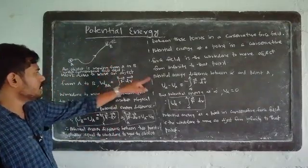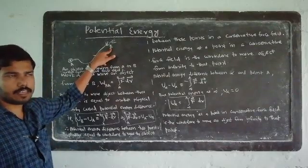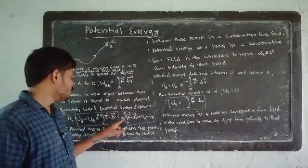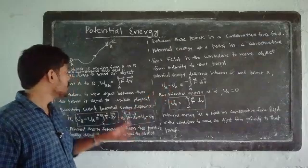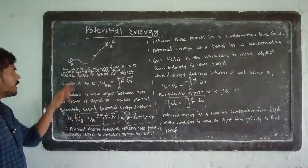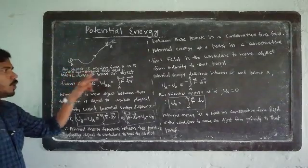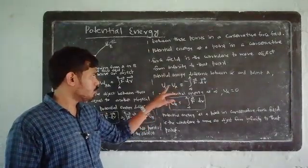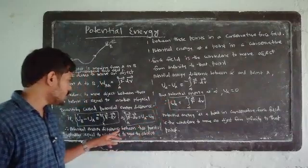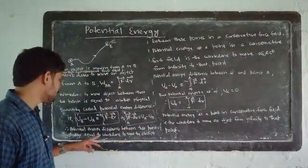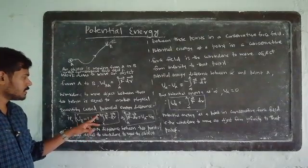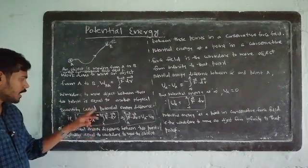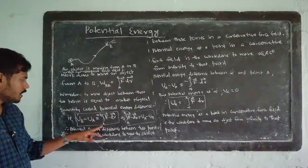The potential energy difference is between the initial potential energy U-infinity and the final potential energy UA. If the initial position is infinity, then U-infinity minus UA is equal to minus integral from A to infinity of F dot dR.